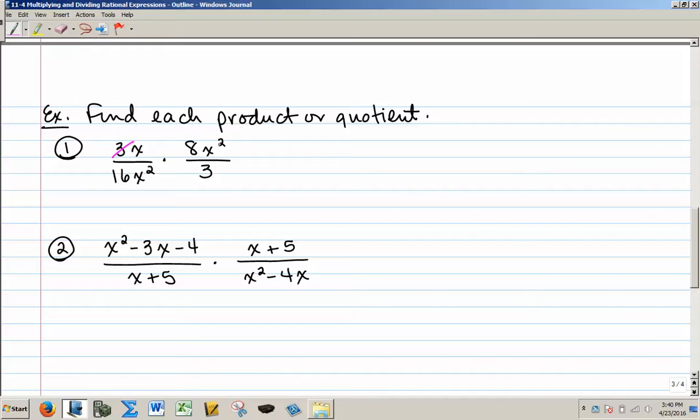The first thing that jumps out at me are these 3s can be canceled, and this 8 can become a 1 and my 16 a 2. And then I have an x squared on the bottom and an x squared on top that can cancel. So left on the top, I have an x, and on the bottom, I have a 2, and that's my simplified rational expression.